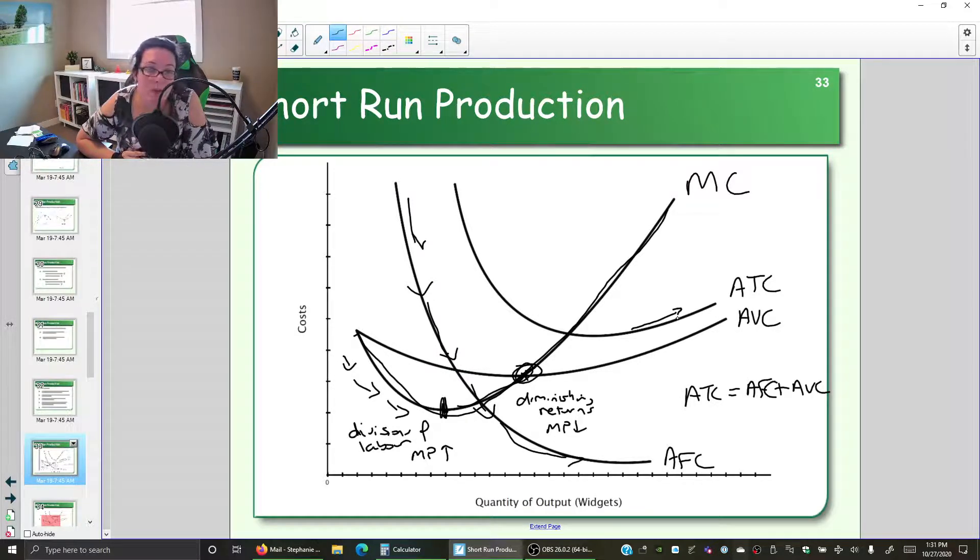The other reason we get this U shape has to do with the marginal. Notice that the bottom of the average total cost curve is where it intersects the marginal cost curve. When the marginal is below the average, it pulls the average down, and when the marginal is above the average, it pulls it up.